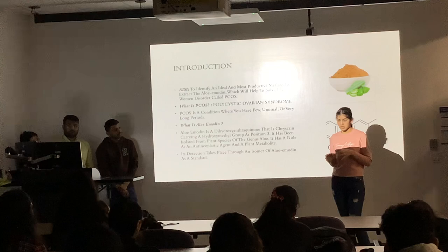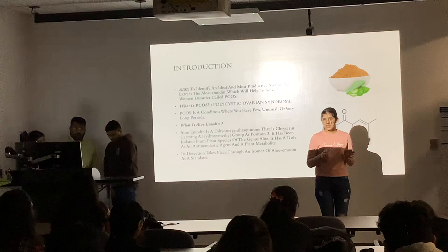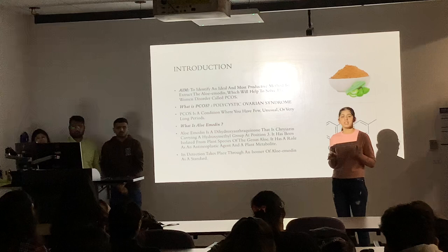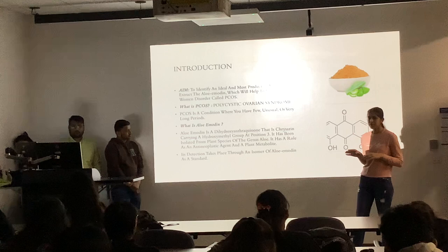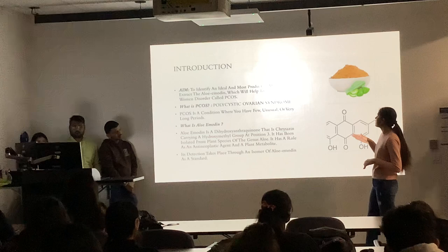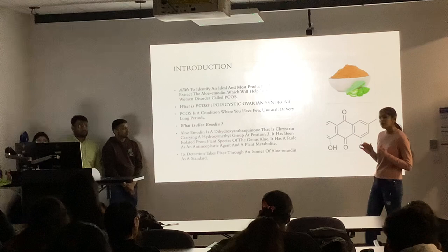Our project goal is to make a herbal product from a natural health product because throughout our research we found that there is no particular treatment for this problem available in the market. There are some birth control and pharmaceutical products available but those are all chemical-based products which also affect human health. That's why we use aloe vera, which contains anti-inflammatory components — aloe emodin and anthraquinone. Aloe emodin is a dihydroxy anthraquinone isolated from plant species of the genus aloe, and in our project we detect aloe emodin by using an isomer of aloe emodin.